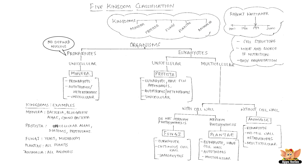Organisms under Monera are prokaryotes — that is, they have no defined nucleus. Their mode and source of nutrition can be autotrophic, which means they can synthesize their own food, or heterotrophic, which means getting food from the environment. They are unicellular.